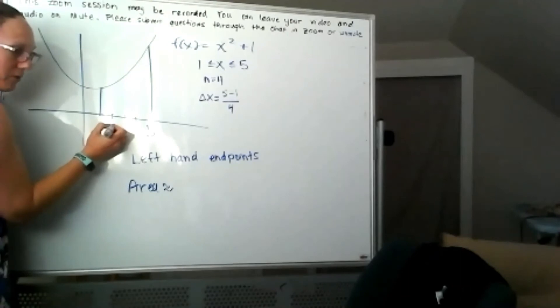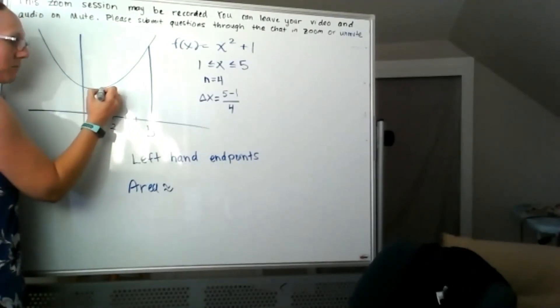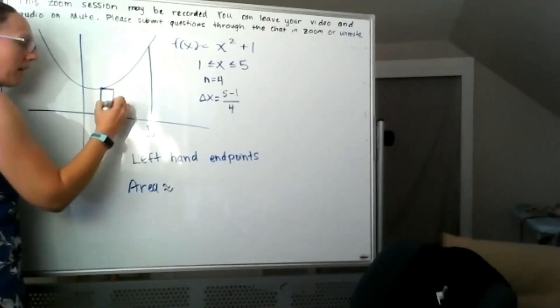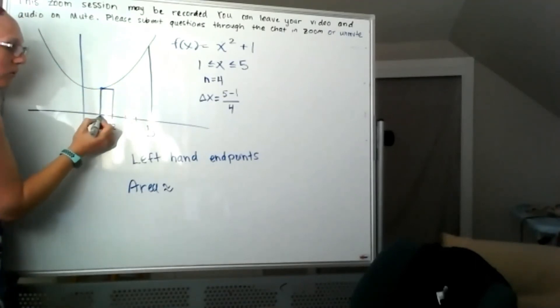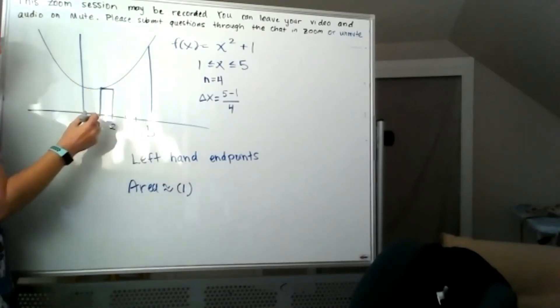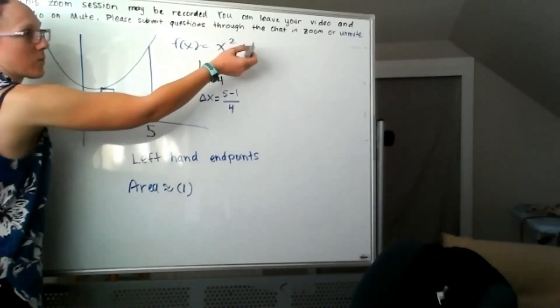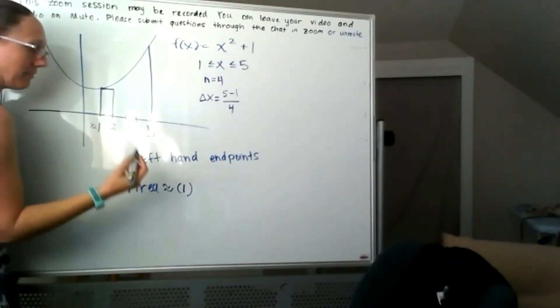So for our first interval between 1 and 2, if I'm using the left-hand side, that means I'm looking at the x value of 1. I know the width of that rectangle is 1, but to get the height I'm looking at plugging in x equals 1 to the function. So when x is 1, 1 squared plus 1, I'm going to get a height of 2.